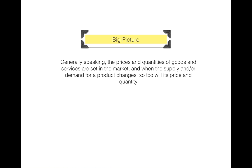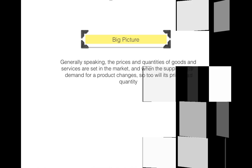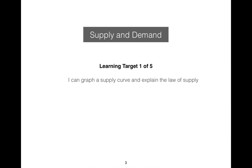Big picture regarding supply and demand product markets. Generally speaking, the prices and quantities of goods and services are set in the market, and when the supply and/or demand for a product changes, so too will its price and quantity.